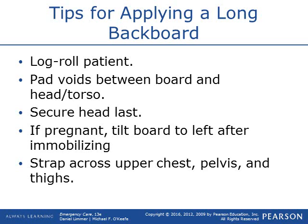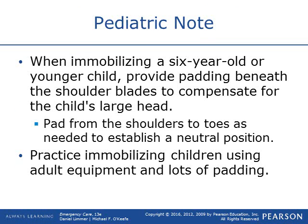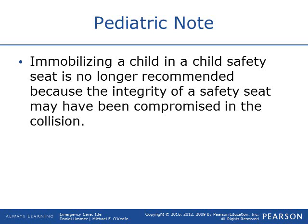Straps go across the upper chest, pelvis, and thighs — avoiding strapping over a site of injury. For pediatric patients under about age six, pad under the shoulder blades to keep the head in an anatomical position. Immobilizing a child in their car seat is no longer recommended because the car seat may have been damaged in the accident — take them out and backboard them. There are pediatric spinal boards available that don't require using a full adult long backboard.